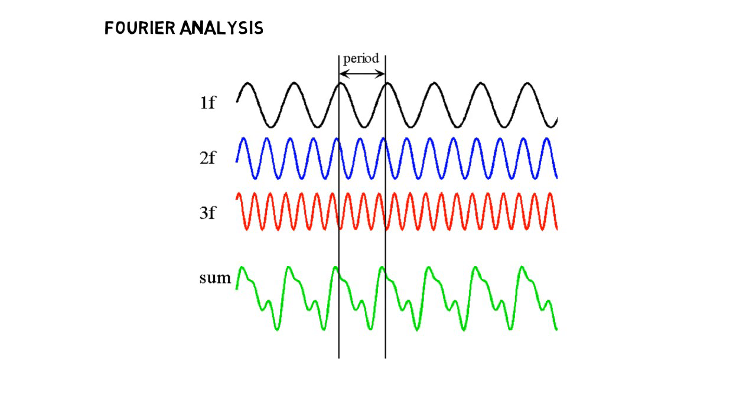For example, as seen in the diagram, the sum graph can be broken down into first, second, and third harmonics.